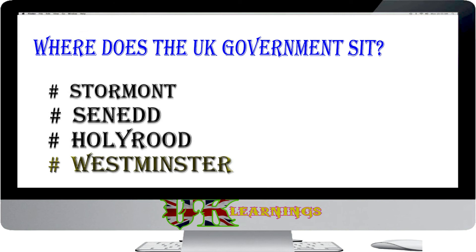Where does the UK government sit? Options: Stormont; Senedd; Holyrood; Westminster. The answer is Westminster. The UK is governed by the Parliament sitting in Westminster.